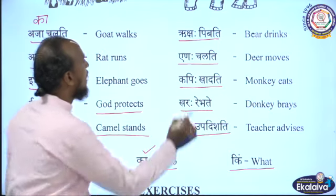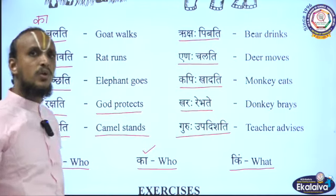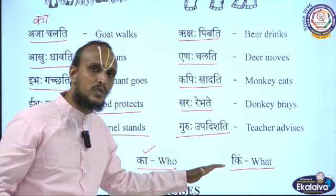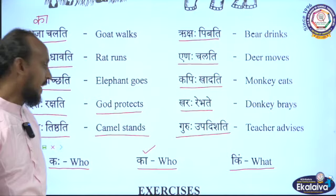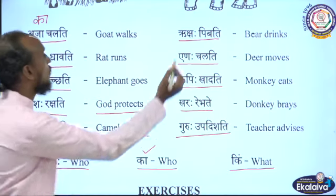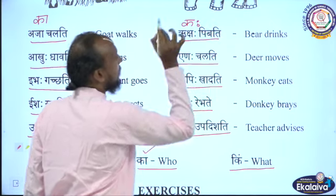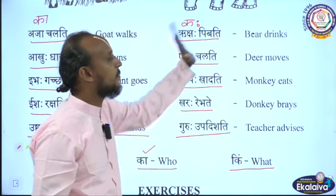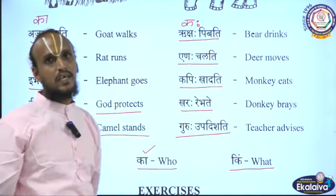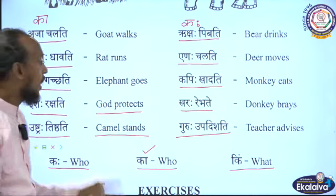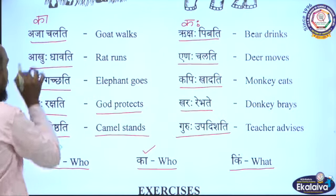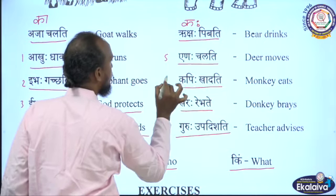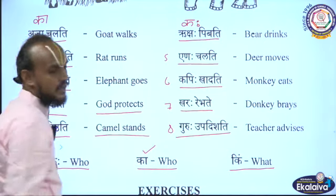For the next sentence 'Riksha Pibati,' which question word do you choose? Riksha is masculine, so you select Kaha. The question becomes: Kaha Pibati? — meaning 'Who is drinking?' Answer: Riksha Pibati — 'Bear is drinking.'